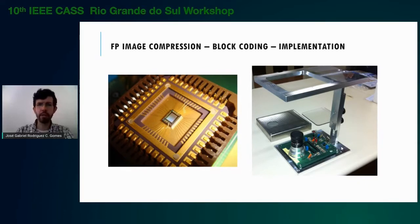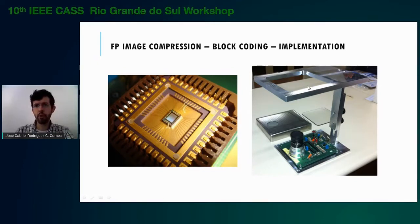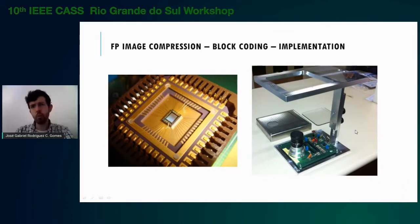This is a photo of the fabricated chip, with a pad and pin from where we serially download the compressed image from a shift register using a PIC. On the right, we see a photo of the experimental evaluation board and optical setup. The objects to be imaged, called targets, are placed on top, about 20 centimeters away from the lens. There is a USB link to a PC where the compressed image is decoded.